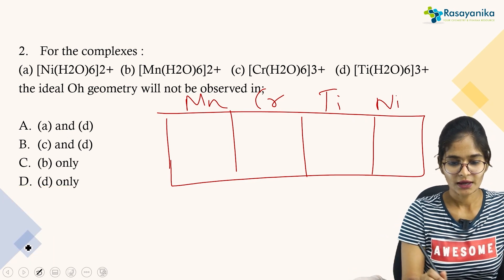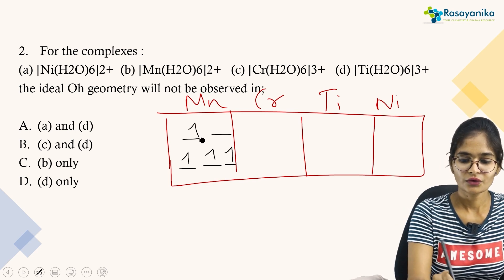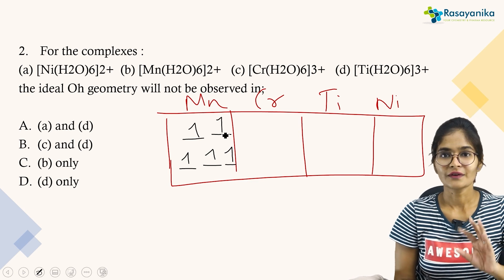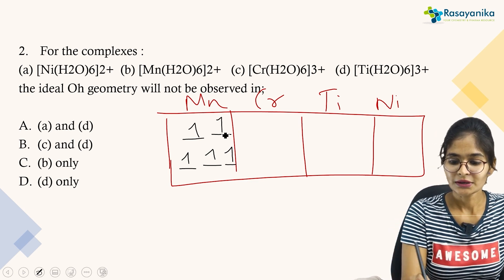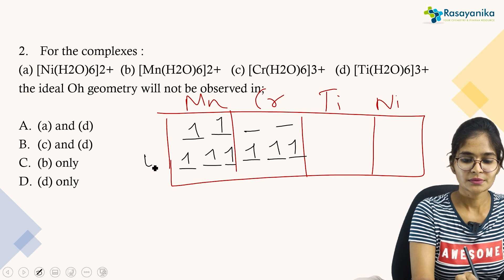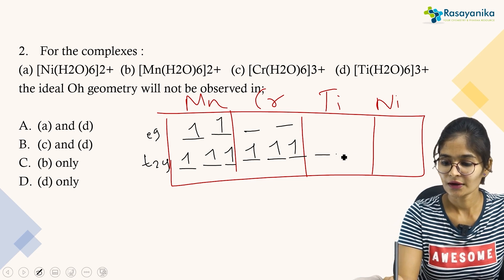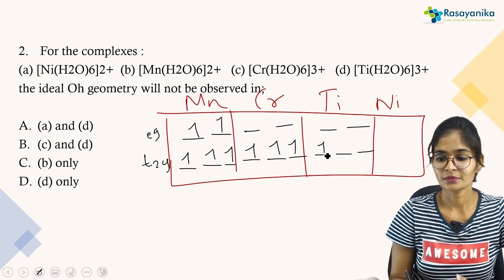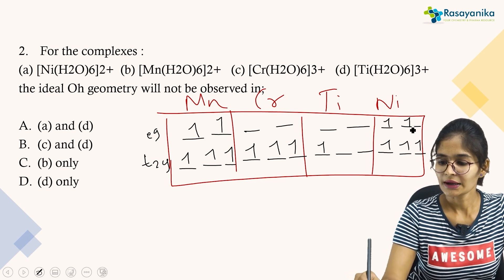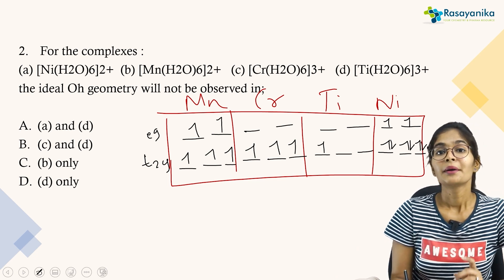For manganese with 5 electrons and water as a weak ligand, the electrons are not paired: 1, 2, 3, 4, 5 — one each across EG and T2G. For chromium with 3 electrons: 1, 2, 3 fill the T2G, leaving EG empty. For titanium with only 1 electron, it fills one T2G orbital. For nickel with 8 electrons: 1–6 fill T2G completely, then 7 and 8 go into EG, making EG half-filled.